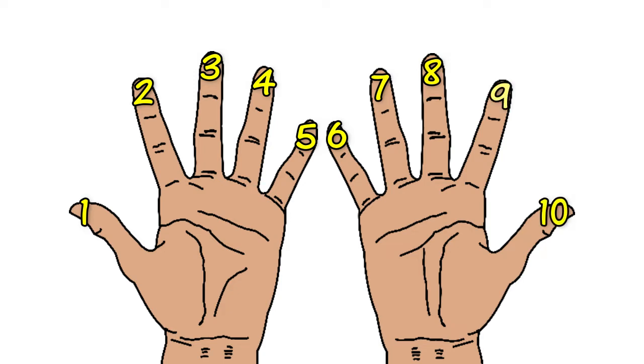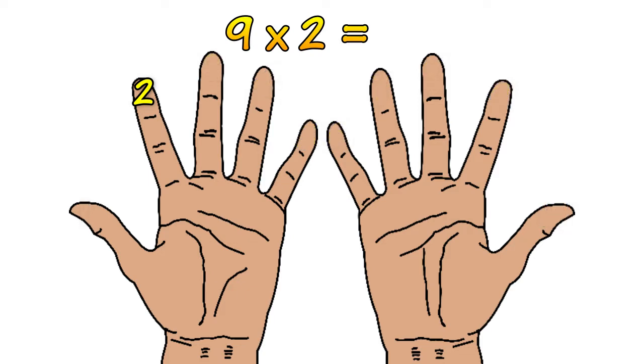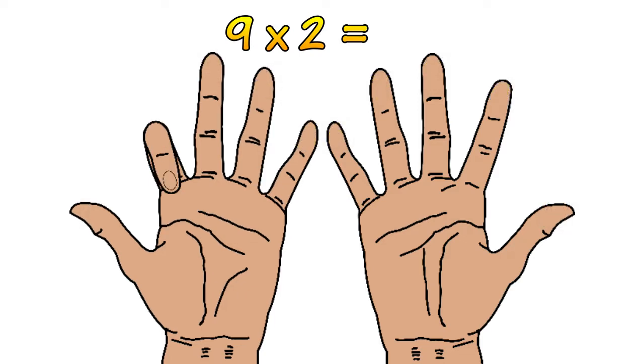Then we can start doing the calculations. So say you want to work out what 9 times 2 is. So you find the second finger and you put it down. Then what you do is you count how many digits or fingers there are to the left of the second finger. In this case it's 1.